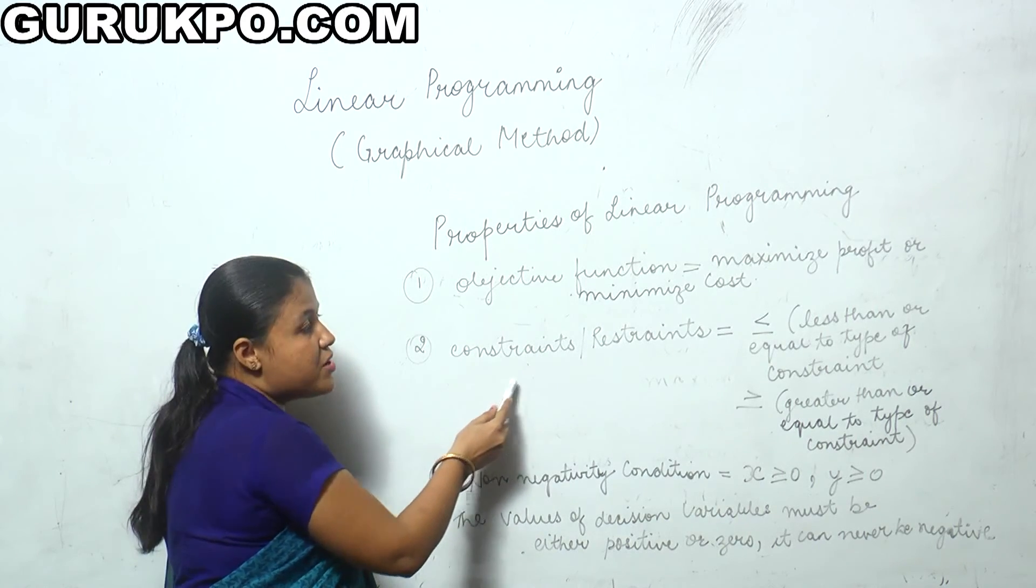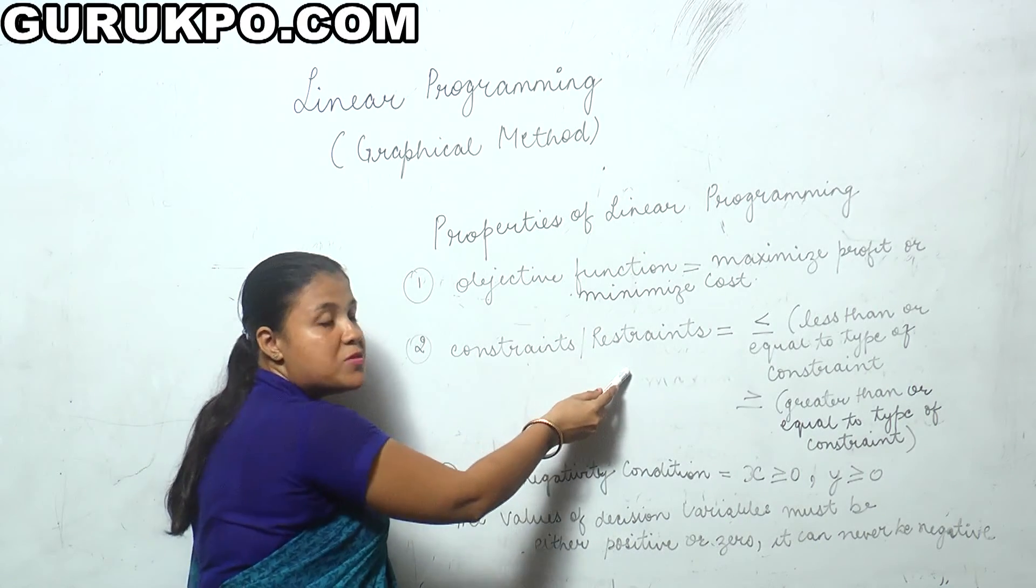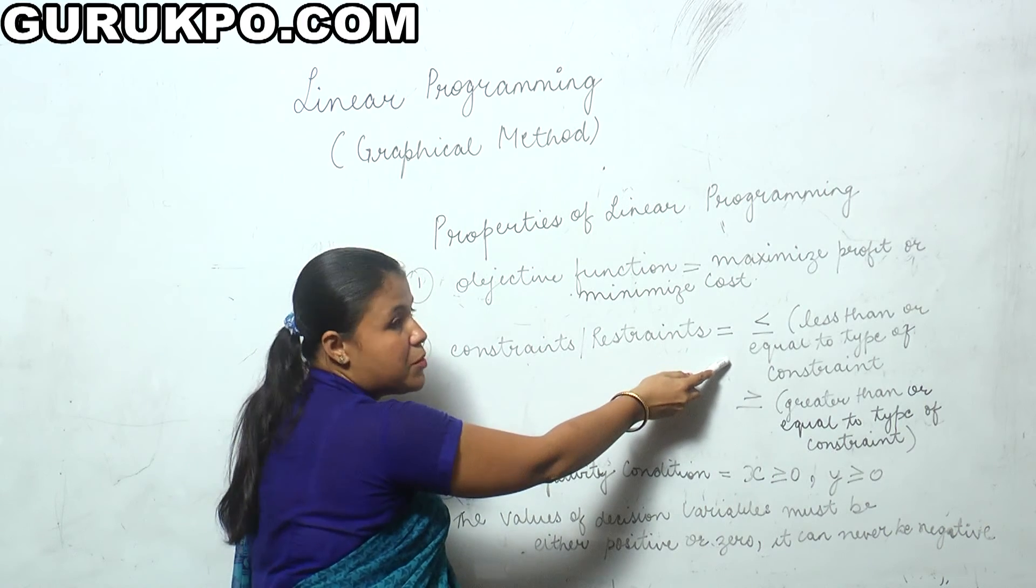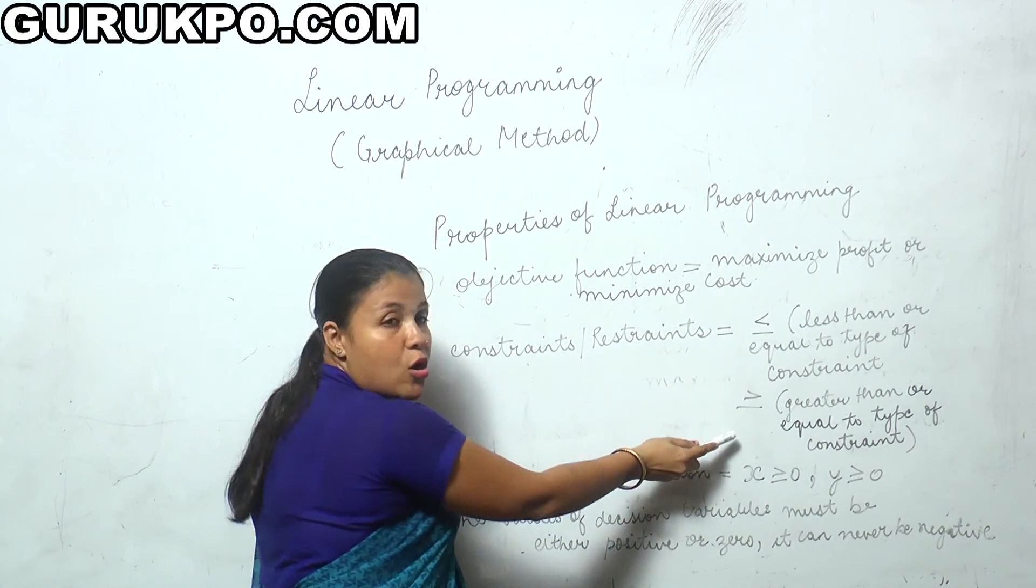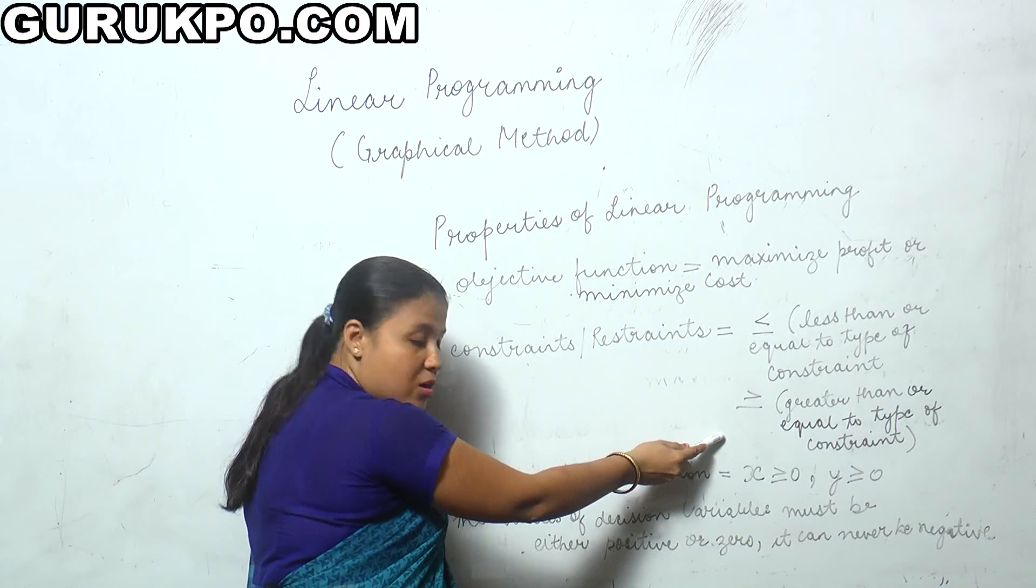The second is constraint and restraint. There are two types of constraints in linear programming problems: less than or equal to type, or greater than or equal to type.